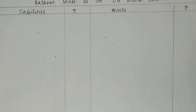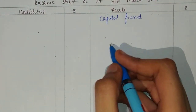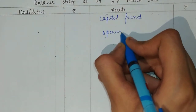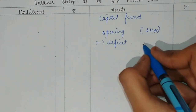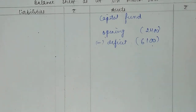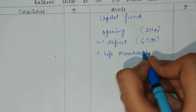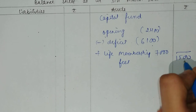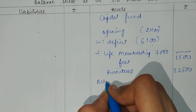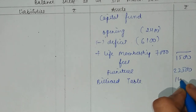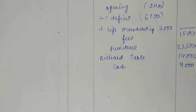Now for the closing balance sheet, the capital fund is shown on the liability side. Since this year we have a deficit of $6,100, it is deducted from the capital fund. Life membership fees of $15,000 are added to the capital fund as usual. The total comes to $15,000. On the asset side, we have the closing furniture balance of $22,500, billiard table purchased this year at $14,000, and billiard table of $4,000. Outstanding subscription of $2,300 is also included.